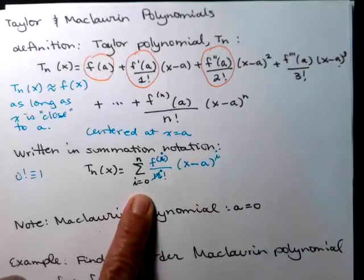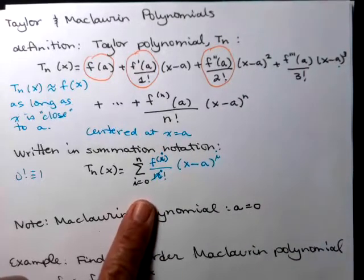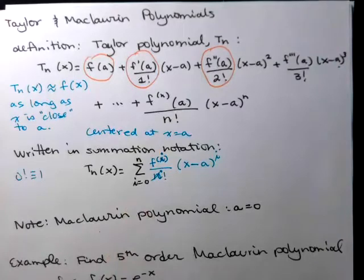And then, I've got the x part. So x minus a, and then it is to the i. The i-th derivative, and this is an i factorial, because I need to stop at n.